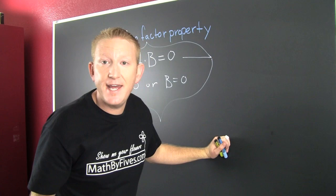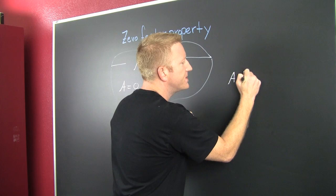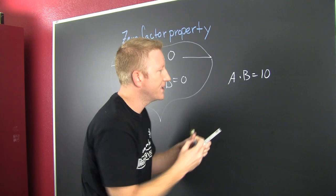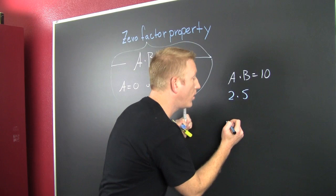Wait, there is no ten factor property. What am I talking about? If you have A times B is equal to ten, does that mean one of them has to be zero? No, because this could be a two and a five. Neither one of those is ten.